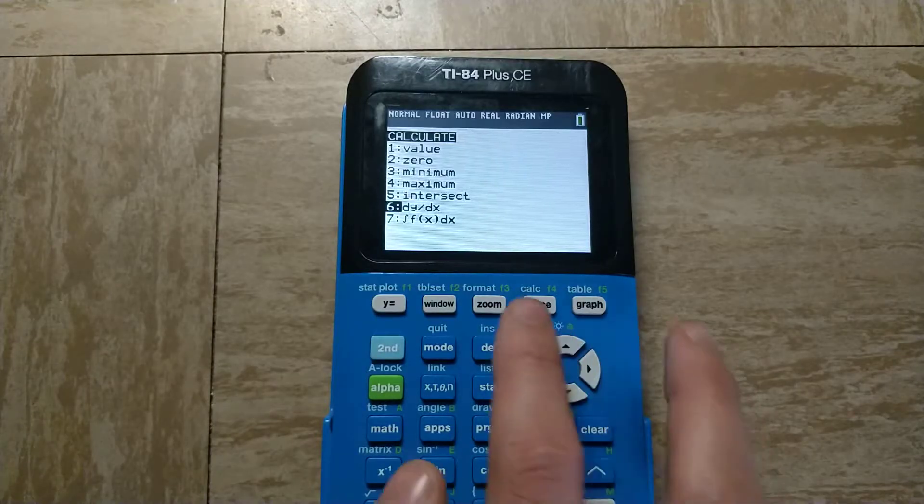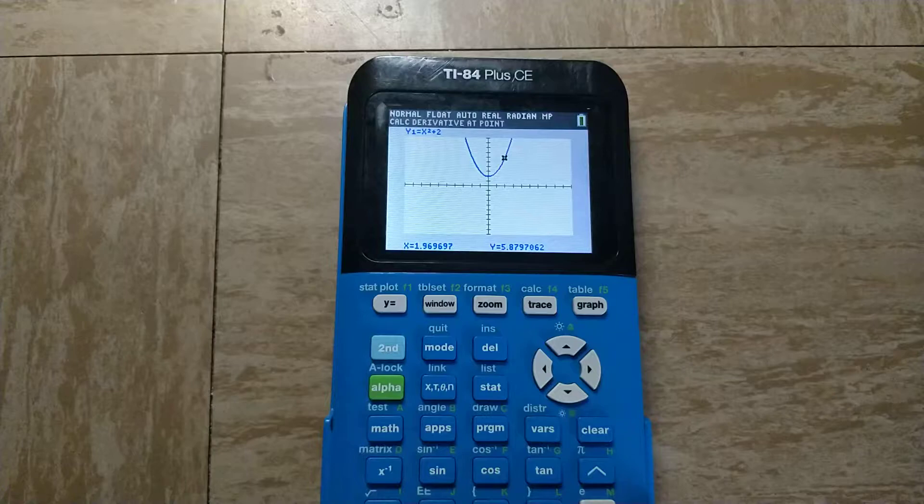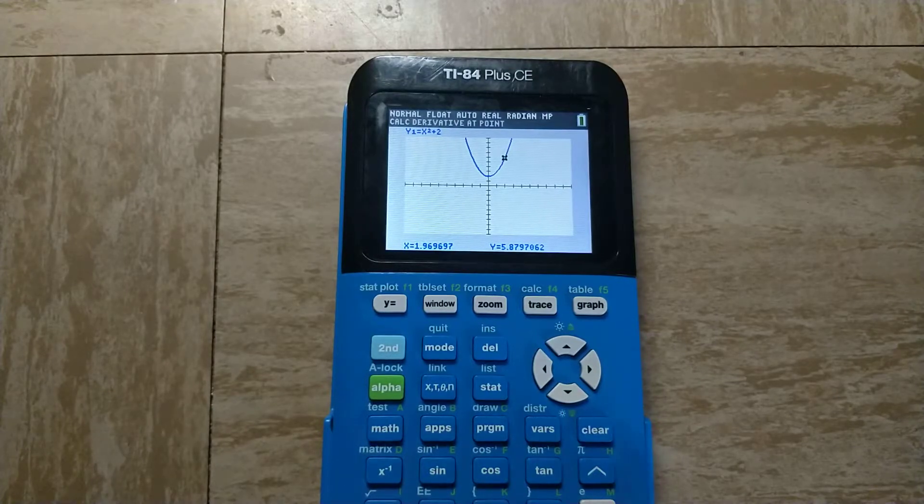The sixth option here is dy over dx. So if I press enter, I can just type in a value of x and it will tell me the derivative at that point.